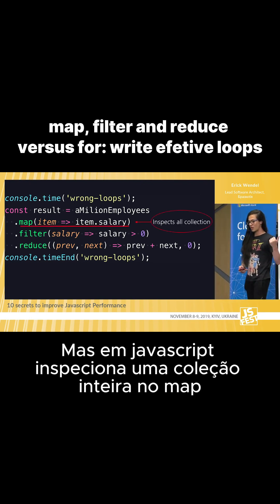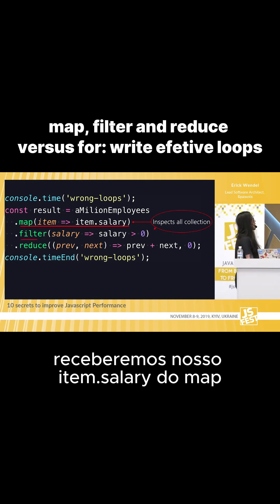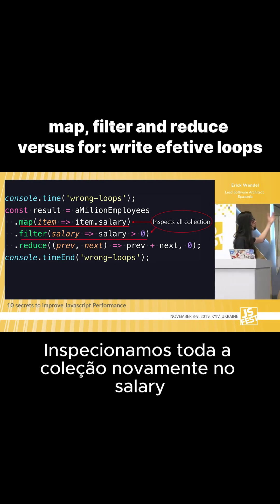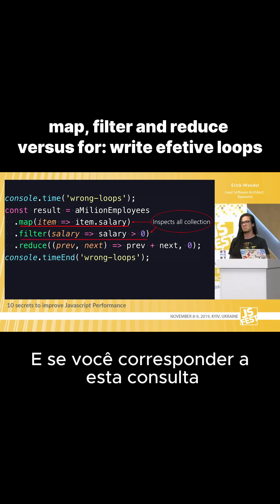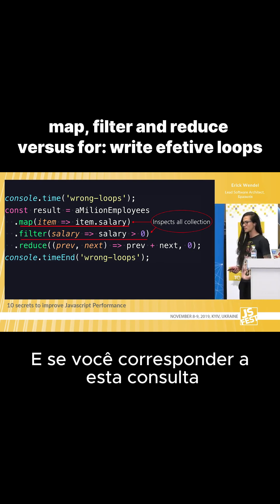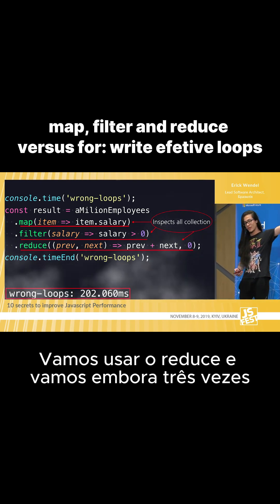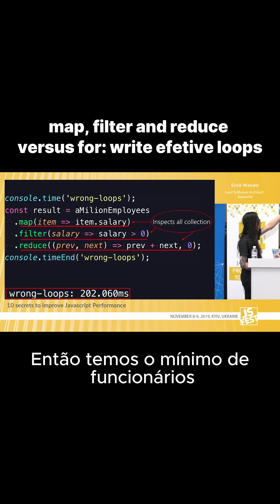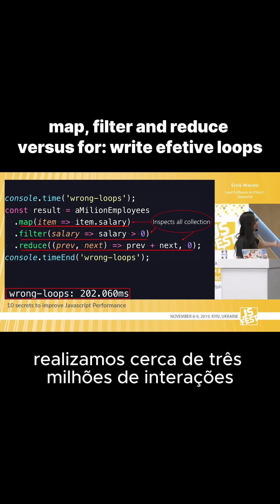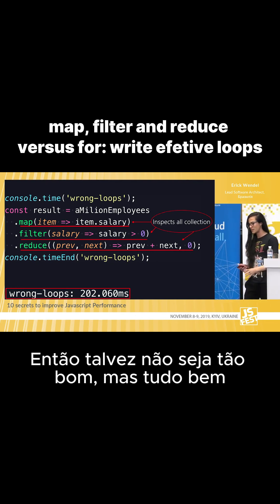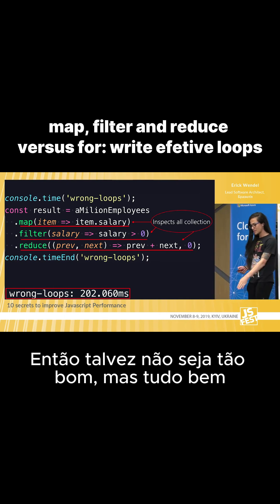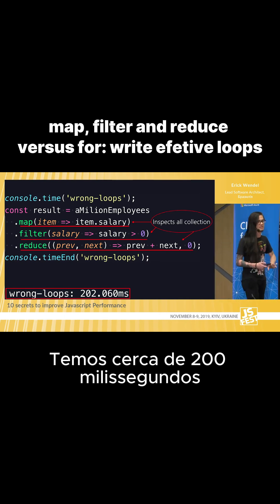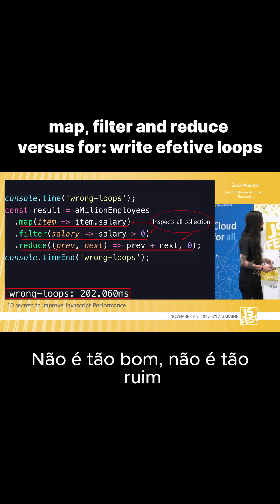But in JavaScript, it will inspect the whole collection on map — we will get our salary from map. We will inspect the whole collection again in the filter. And if you match this query, we will use reduce and we will go through it three times. So we have a million employees, we run like three million iterations. So maybe it's not so good, but it's fine — we have like 200 milliseconds. It's not that good, it's not that bad.